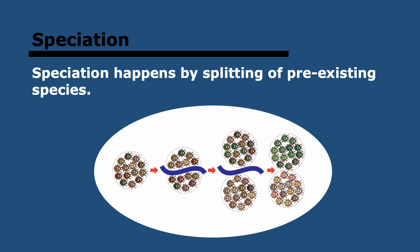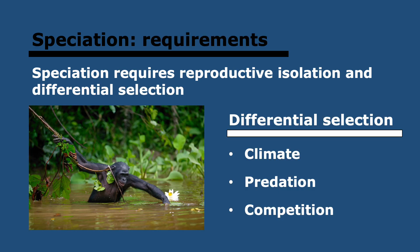Let's look at speciation. The only way for species to form is for two populations of the same species to become separated so that they can't interbreed. You also need natural selection to act differently on both. Hopefully they'll diverge gradually over time, and at one point, if they have the chance of interbreeding but don't, they will be considered separate species. It happens by splitting of pre-existing species. The actual terms for this are reproductive isolation and differential selection.